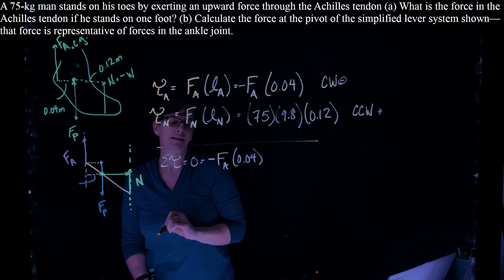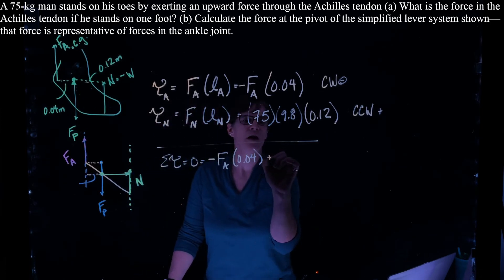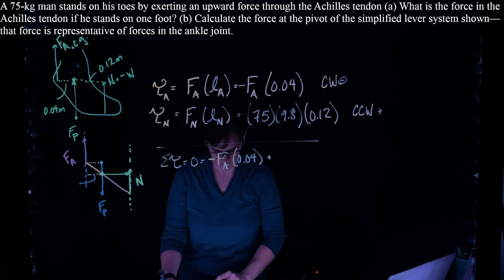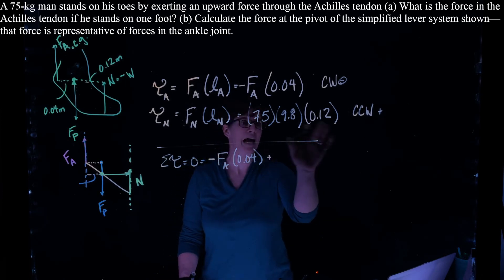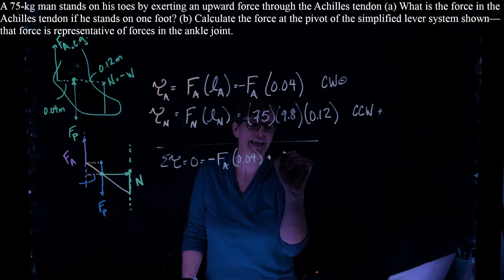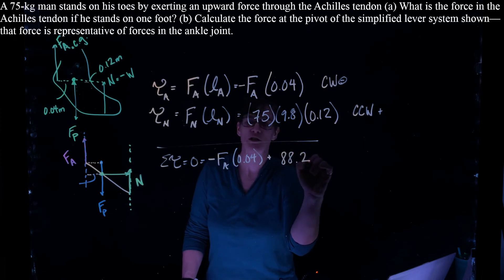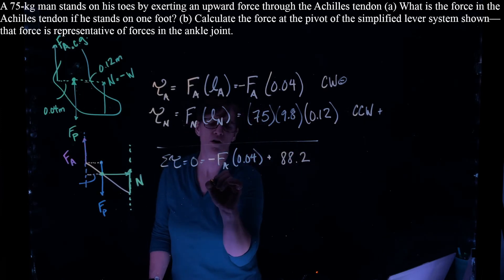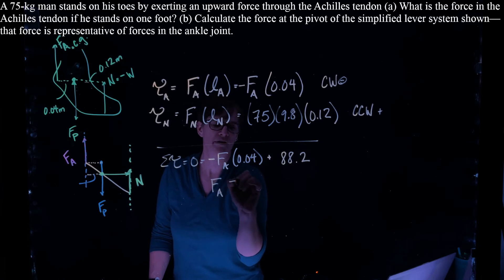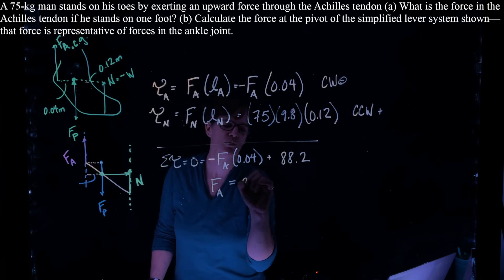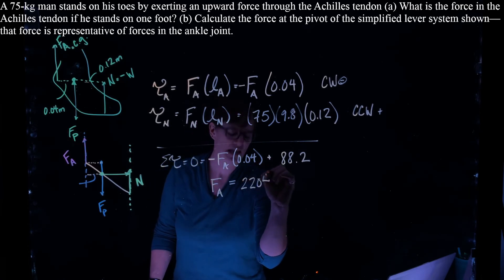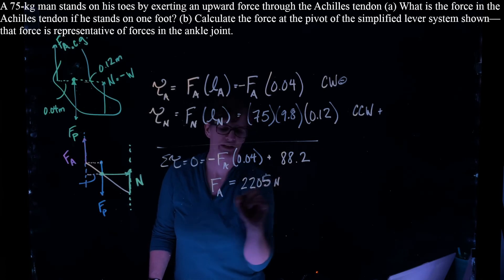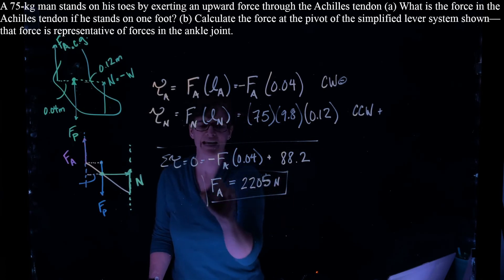So our Achilles torque is negative plus 75 times 9.8 times that 0.12 is 88.2. And I can solve for the force of the Achilles is 2,205 newtons. So that is part A.